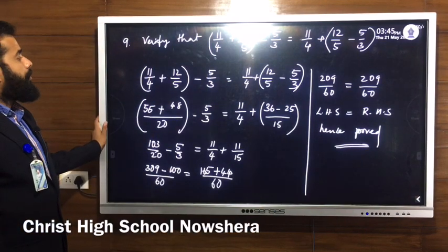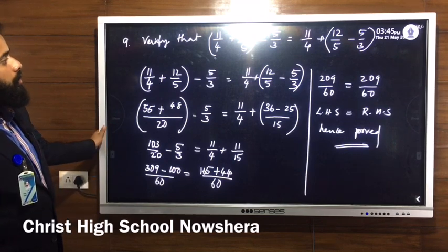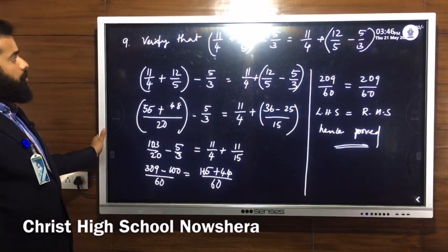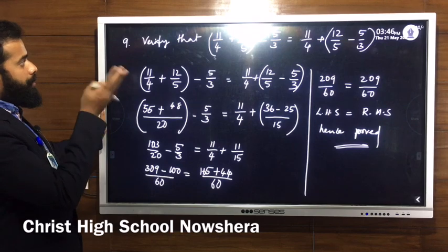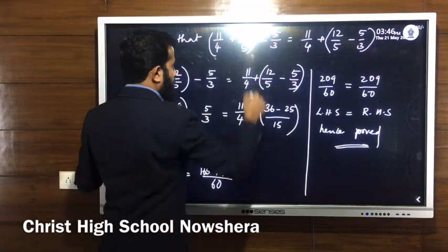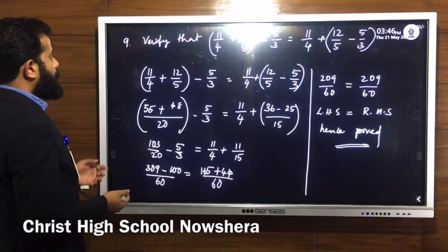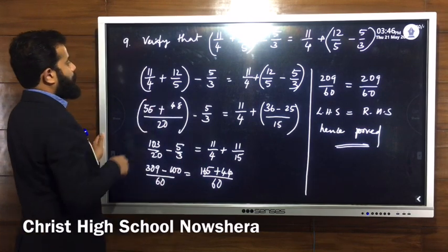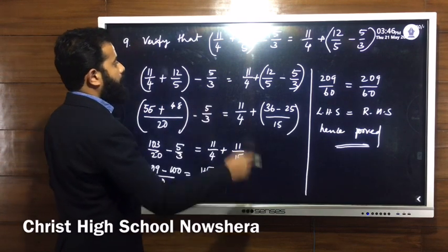Question number 9: verify that (11 by 4 plus 12 by 5) minus 5 by 3 equals 11 by 4 plus (12 by 5 minus 5 by 3). This is the associative property — just grouping the terms separately. We need to check whether LHS equals RHS. Left side: (11 by 4 plus 12 by 5) minus 5 by 3. Right side: 11 by 4 plus (12 by 5 minus 5 by 3).